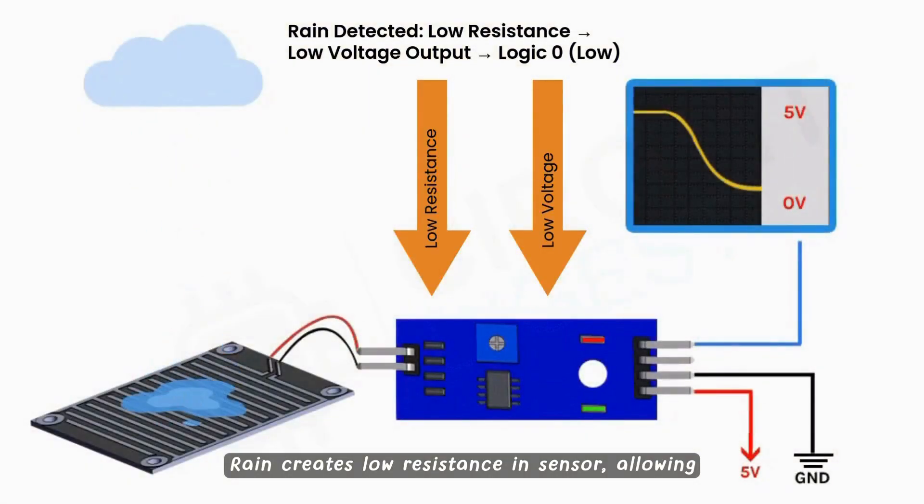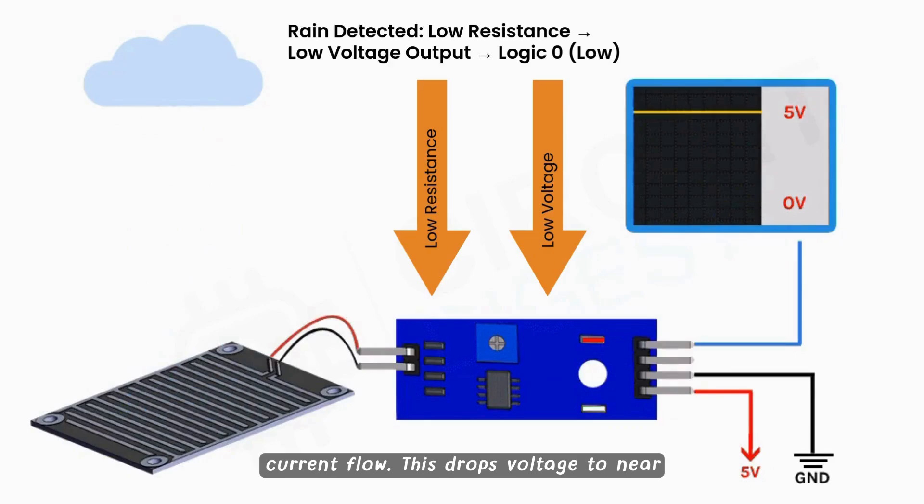Rain creates low resistance in the sensor, allowing current flow. This drops voltage to near zero, producing a logic zero signal. Unlike dry conditions, this completes the circuit, confirming rain detection.